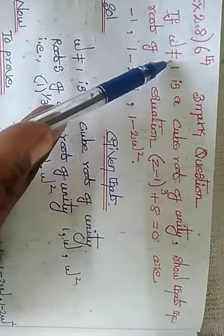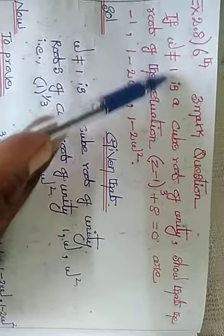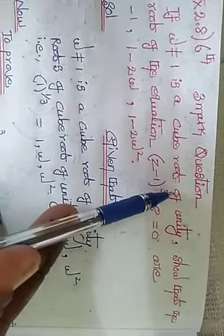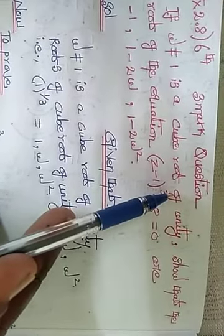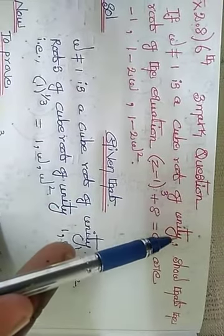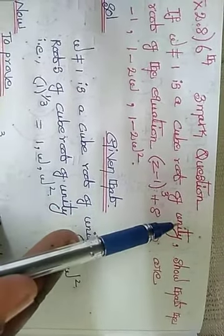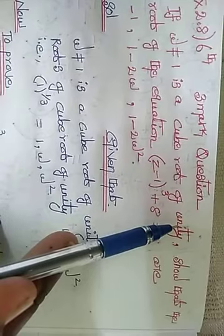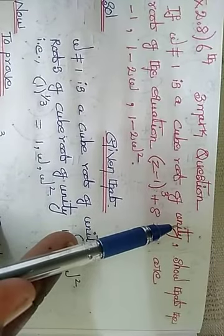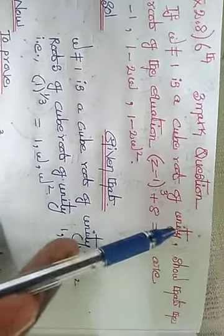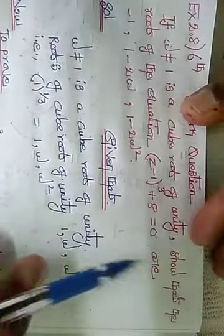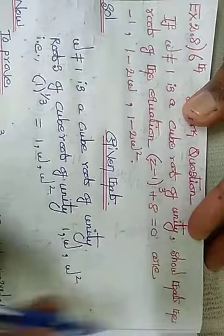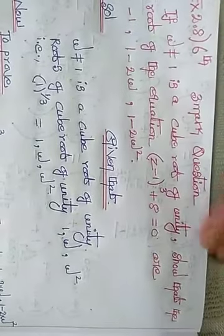If omega (ω) ≠ 1 is a cube root of unity, what is the meaning of cube root of unity? The answer is: 1, omega, omega square.